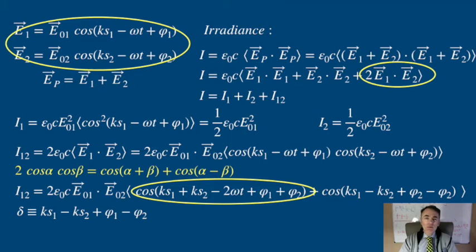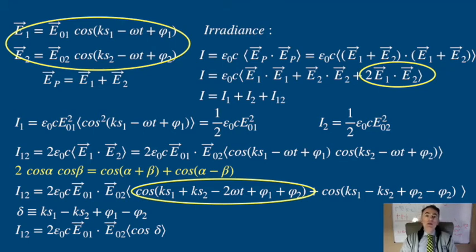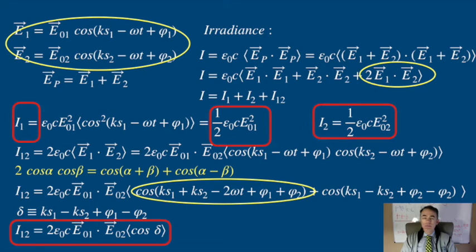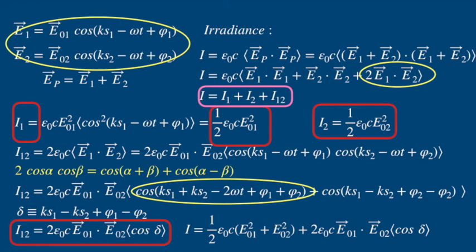So we simplify the irradiance at P as ε0c times E01 times E02 times the average of cosine of δ, where cosine of δ is a constant. With this we can now write the total irradiance at the crossing point P as...